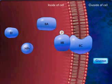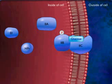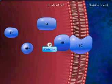The membrane-bound Enzyme IIC then carries the glucose across the membrane, and the glucose becomes phosphorylated as it enters the cell.